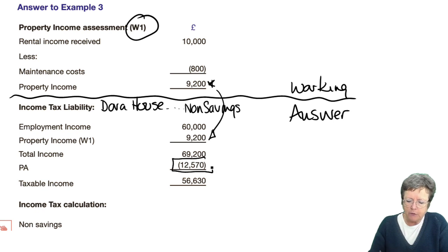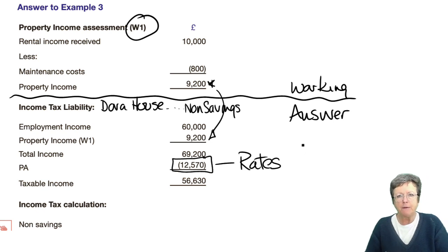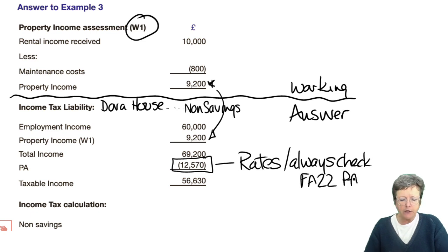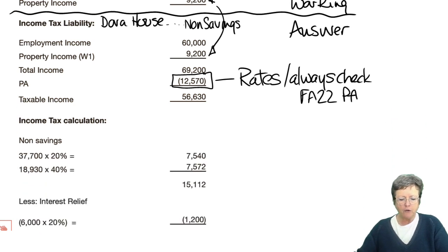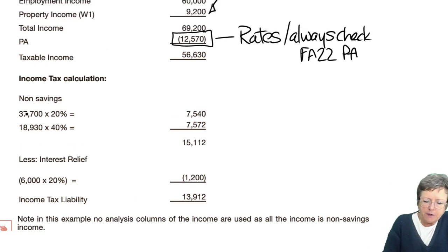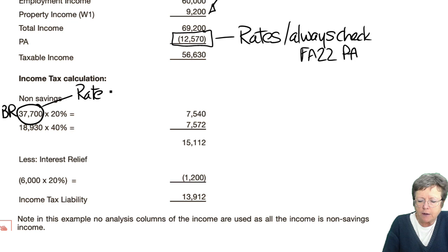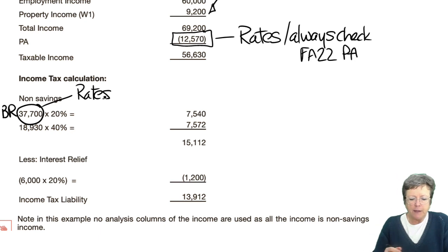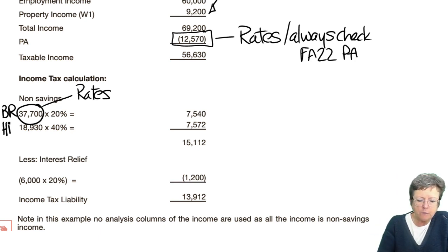This is the personal allowance — that is in the rates at the front of the exam, and I explain that in the introductory lecture. Always check, because it changes. So this is the Finance Act 2022 personal allowance, giving a taxable income of £56,300. The non-savings income: this is the basic rate — that amount is in the rates. Make sure you check that and always double-check your maths. The balance of the income is then taxed at the higher rate, which is 40%.